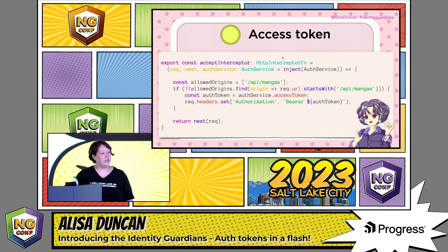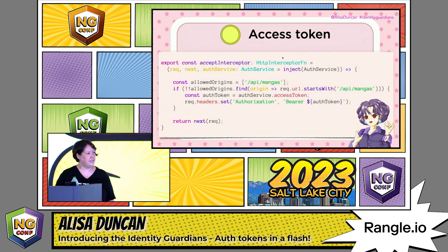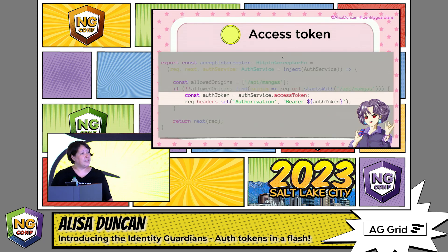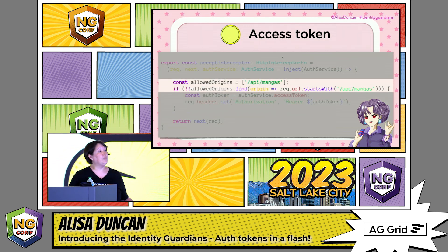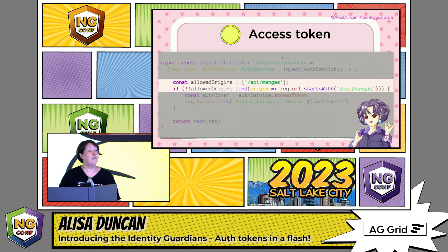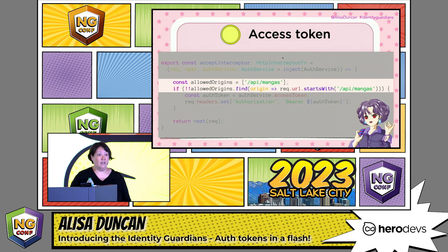If we take a look at a functional interceptor, what you'll do is inject the auth service — a service from the OIDC certified library that you're using — and it manages the tokens for you. Then you'll get the access token and set that in its entirety to the authorization header using the bearer scheme. But you don't want to do this for all outgoing calls because that's dangerous. You must ensure that the access token doesn't fall into nefarious hands by limiting the allowed origins that it goes to. This will prevent your token from leaking. Leaked tokens will allow villains to impersonate you, so we must always limit to allowed origins.